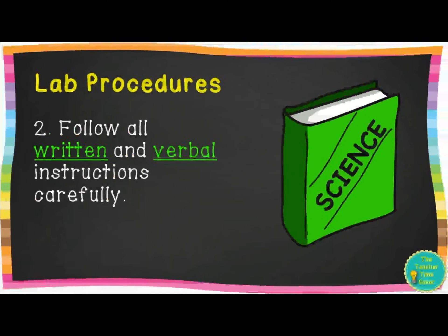The next rule is to follow all written and verbal instructions carefully. Written means stuff that's written down — I might give you a procedure list that you have to follow to make your crystals. Verbal means instructions that I tell you, words that I say to you. So whether it's something written or something I tell you in person, you have to follow what I say when you're doing the lab.